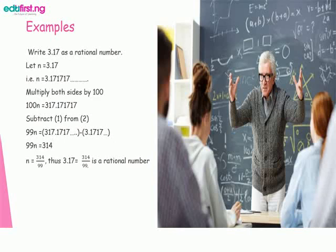99n equals 314. Therefore, n equals 314/99 because we have divided both sides by 99. Thus, 3.17 repeating equals 314/99, which is a rational number.